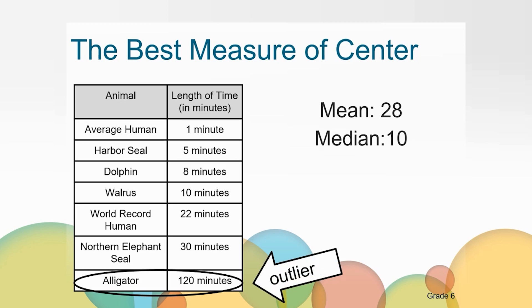The mean is a good choice when the data set looks fairly similar. This is the best descriptor when you do not have an outlier or outliers in the data. For this set of data, the median is the most useful measure of center that helps us understand the average time an animal can hold its breath underwater.